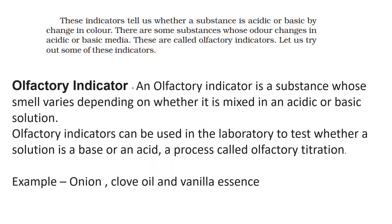Moving on — olfactory indicators: what are they? Olfactory indicators are substances whose smell and color change in acid and base. Olfactory indicators can also be used in the lab to check whether a solution is acidic or basic. Examples are onion, clove oil, and vanilla essence.